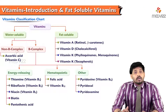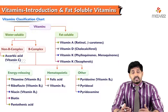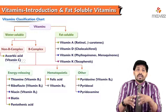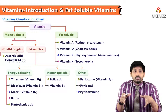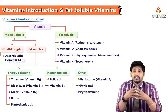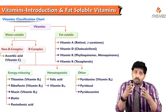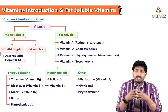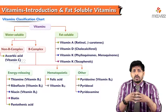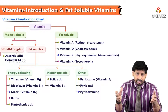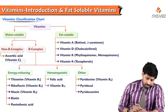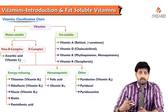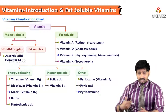Hello everyone, as in our previous video, this is a continuation of the introduction to vitamins. In this video we'll be talking about the classification of vitamins and the differences between fat-soluble and water-soluble vitamins. Vitamins are organic compounds required in minute quantities for normal growth and body functioning. Vitamins are broadly classified into two types: fat-soluble and water-soluble.